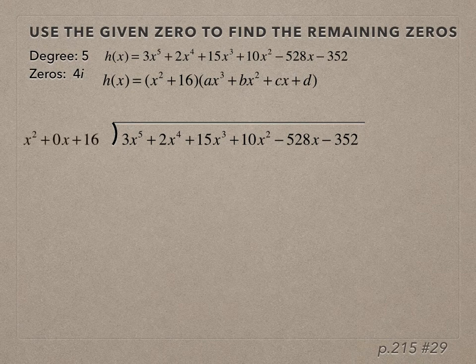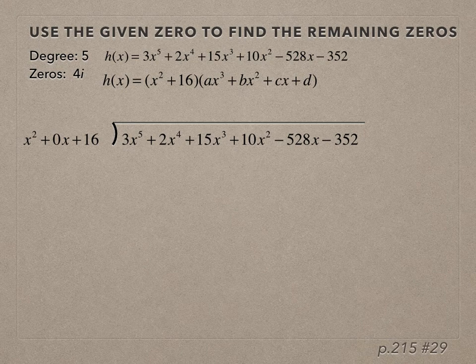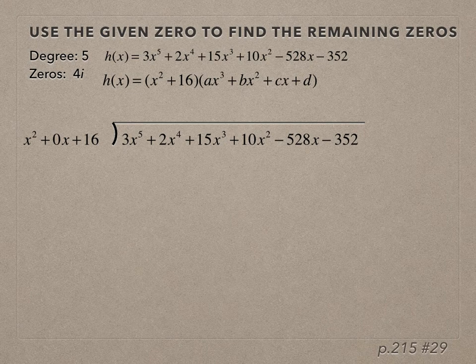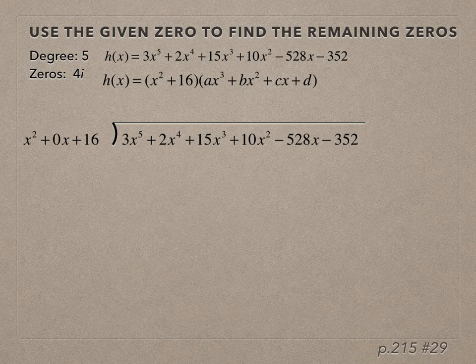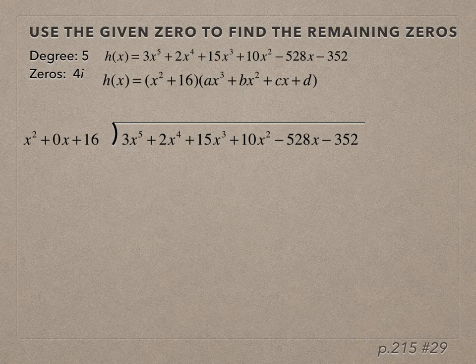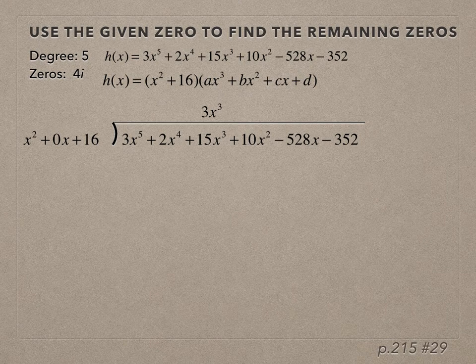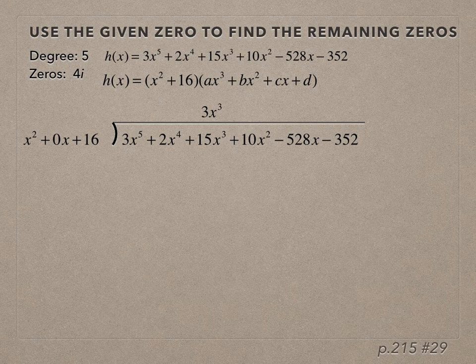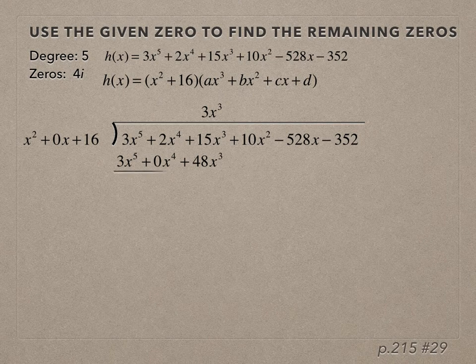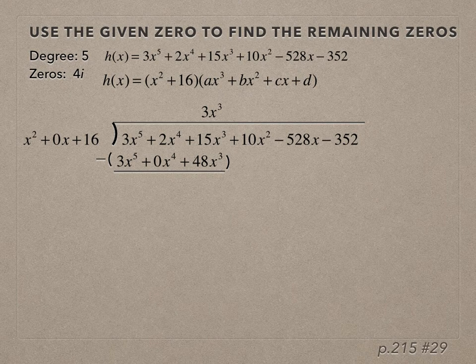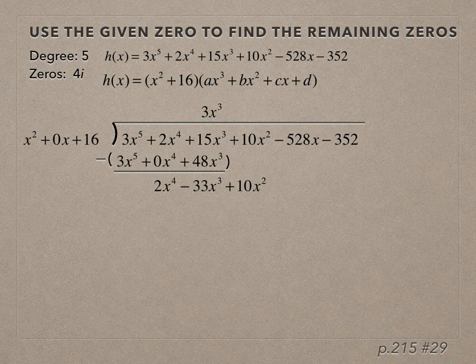To use polynomial long division, we don't want to forget the 0x term. First, we look at x² and ask: x² times what is 3x⁵? Answer: 3x³, which we put over the x³ term. Now we multiply 3x³ by each term in the divisor and subtract from the terms above, remembering to add the opposites. We get 2x⁴ - 33x³, then bring down the +10x².